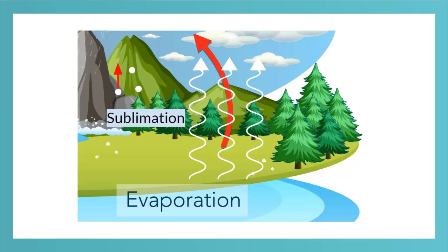Sometimes when it snows, the air temperature is so warm, the snow turns into water vapor and is brought back up into the atmosphere. This is called sublimation.